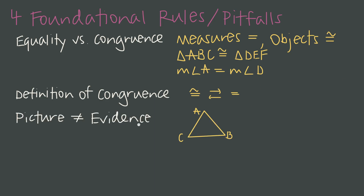The third rule — and this one's really critical — is that a picture or diagram is not necessarily evidence. We never assume something from a diagram that isn't specifically told to us or that we can't explicitly prove. For instance, if given triangle ABC that looks equilateral, we can't assume it is equilateral. We would specifically have to be given hash marks indicating all three sides have equal length in order to know the triangle is equilateral.